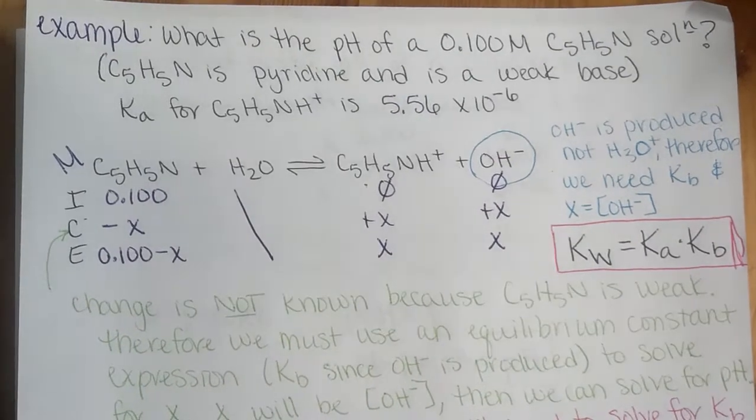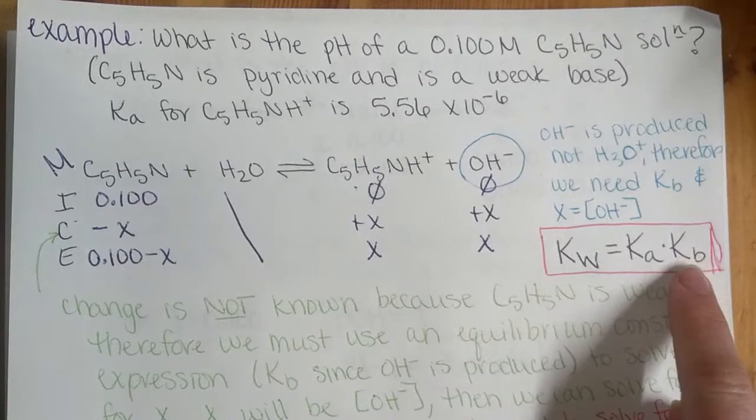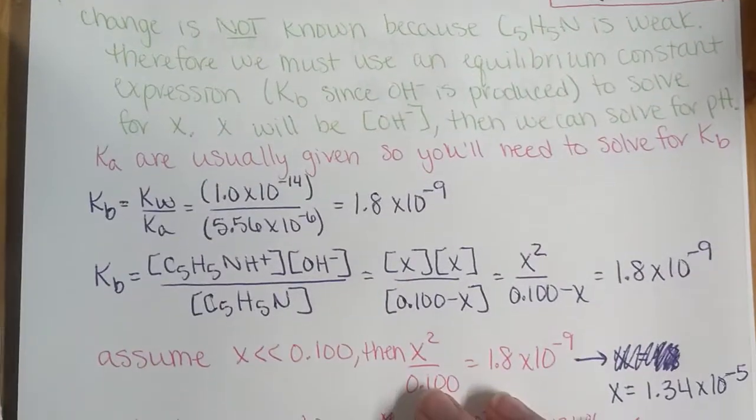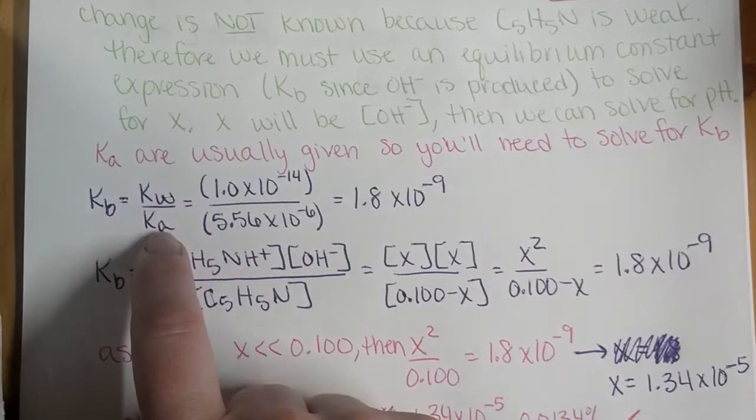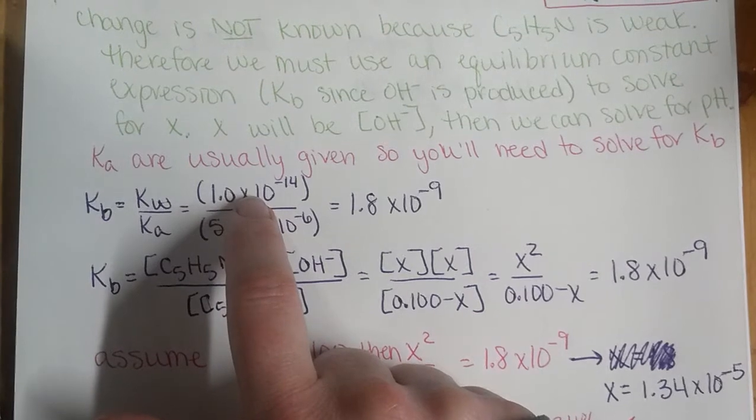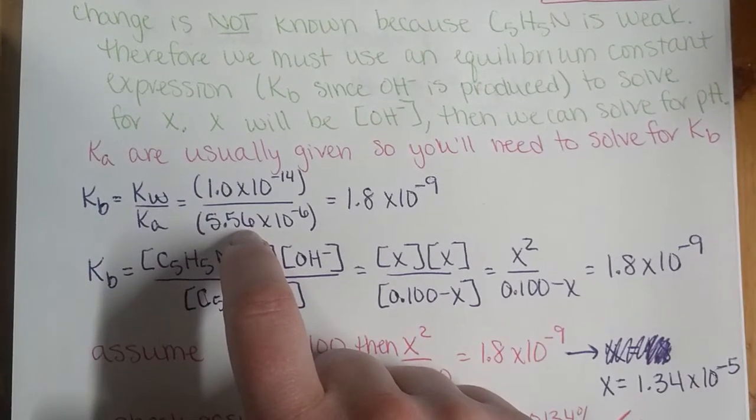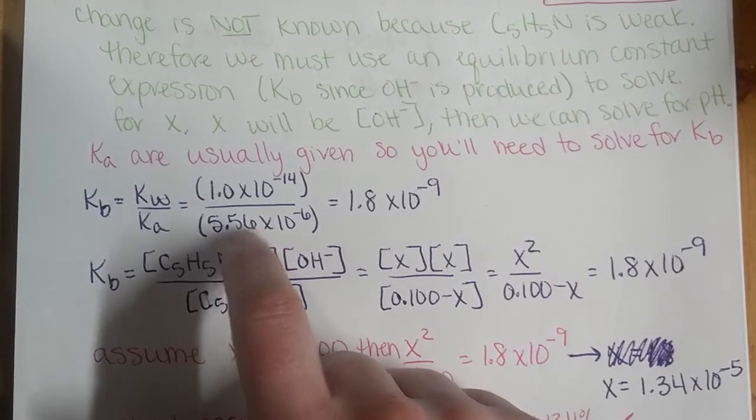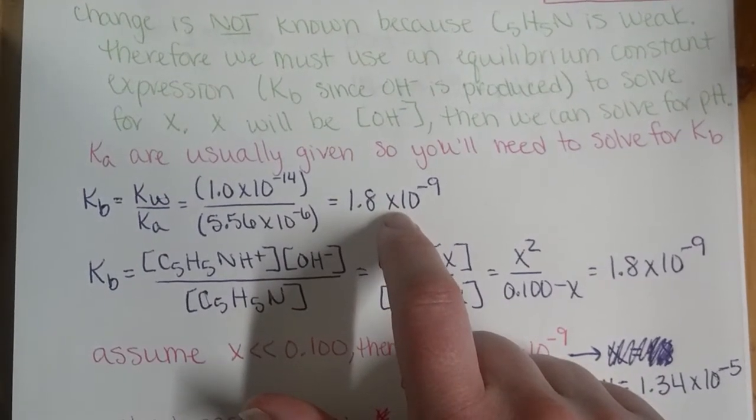So our change in our conjugate acid is plus X, and change in hydroxide is plus X. So we now can set up an equilibrium constant expression. We also need to solve for our Kb value. So Kb is going to equal Kw over Ka, 1 times 10 to the negative 14 over the given Ka, and that's equal to 1.8 times 10 to the negative 9.